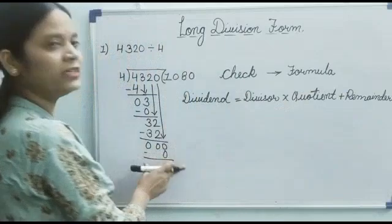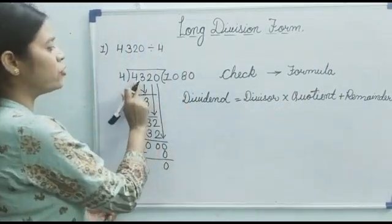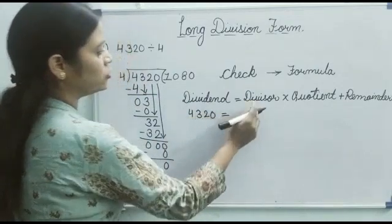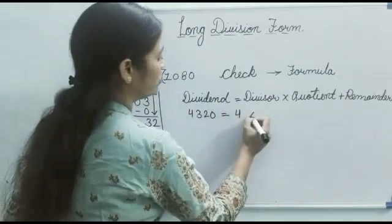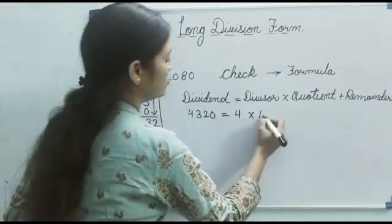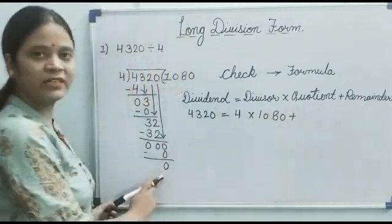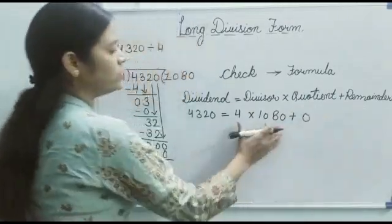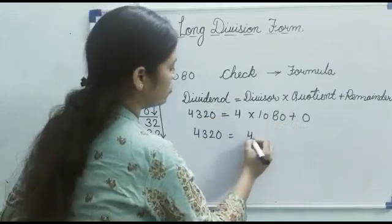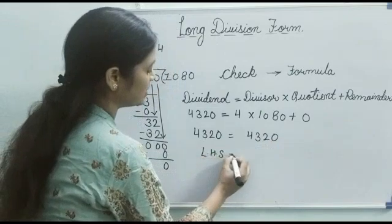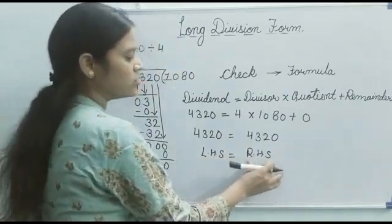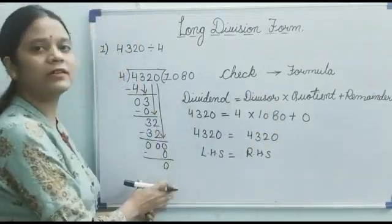Now we put in the values using the first example. The dividend is 4320, so we write 4320 equals divisor 4, multiplied by quotient 1080, plus remainder 0. When we solve the right-hand side we also get 4320. Here LHS is equal to RHS — the left-hand side answer equals the right-hand side answer. This means our answer and our division are correct.